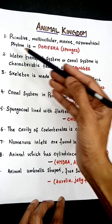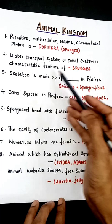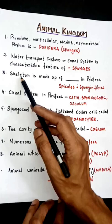The water transport system, or canal system, is a characteristic feature of sponges. The skeleton is made up of spicules and spongine fibers in Porifera.